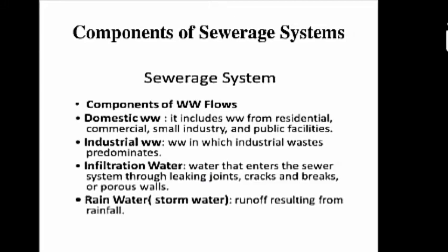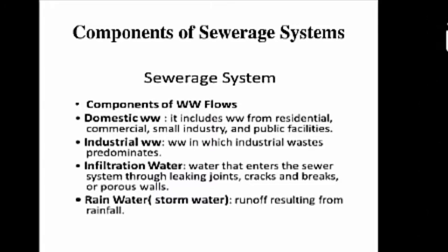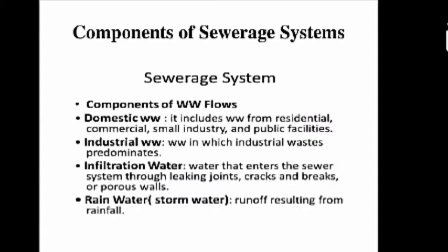The first type of sewage is domestic wastewater, simply denoted as DWW. Domestic wastewater includes wastewater from residential buildings, commercial complexes, small industries, and public facilities. All these are the sources of domestic wastewater.